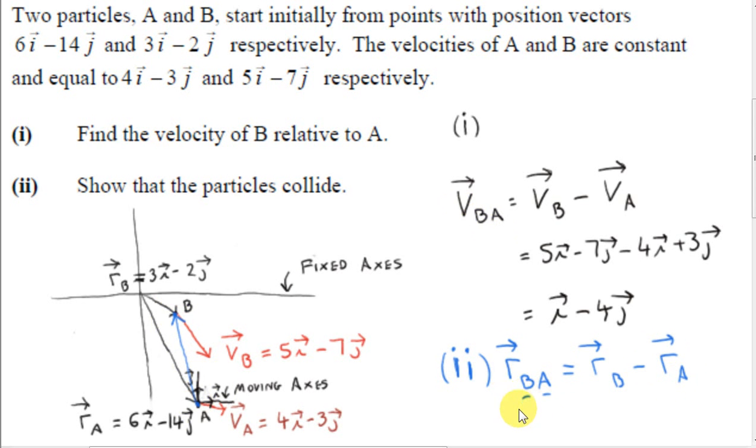And we know from a previous video that that's just RB minus RA, the position of B relative to A. And as I've explained before, if you take vector RA and add it onto vector RBA, the RA's will cancel and we will get vector RB. So everything works out if we apply the triangle law. Vector RA plus vector RBA should give us vector RB.